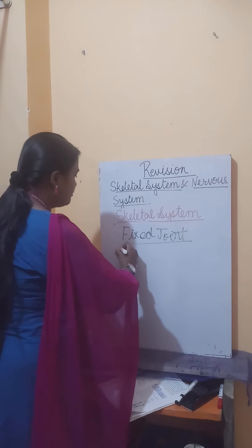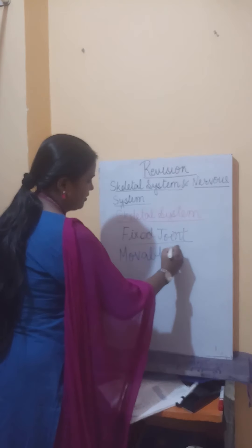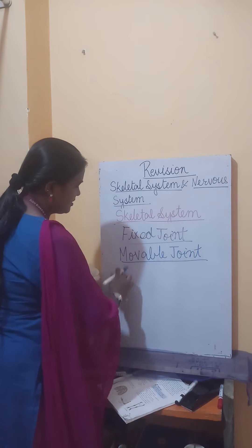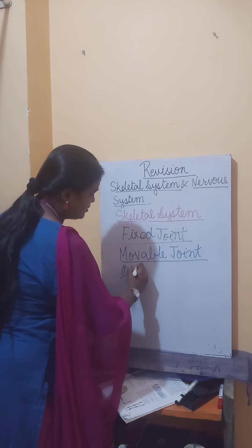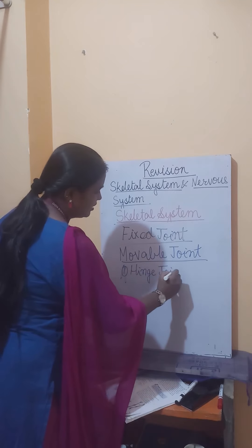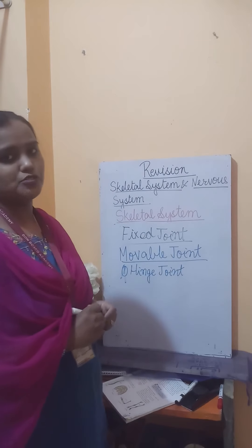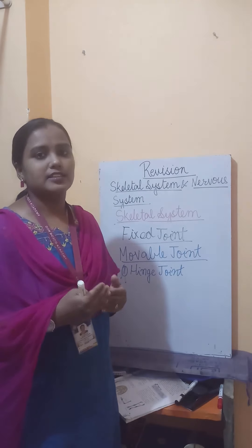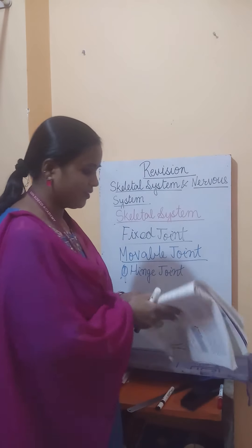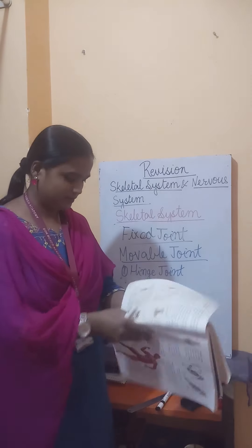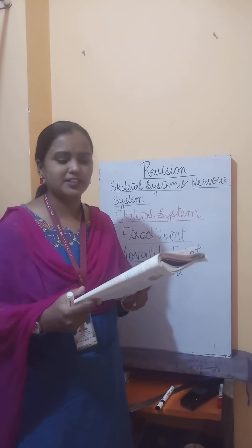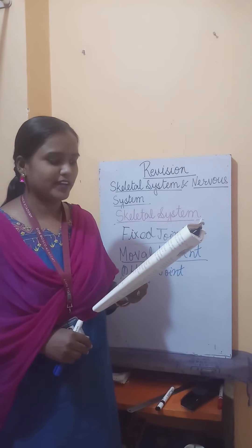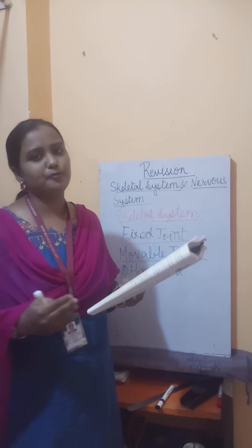Inside a human body there are four types of movable joints. Number one is the hinge joint. Hinge joints are like hinges of a door and they allow movement only in one direction. Hinge joints are present in our elbows, knees, fingers, and toes.